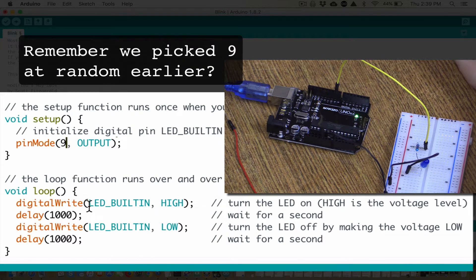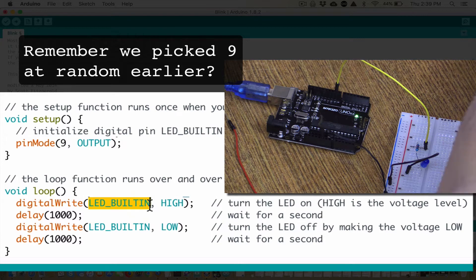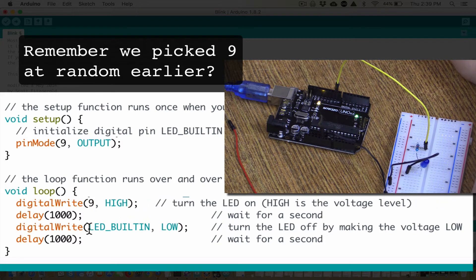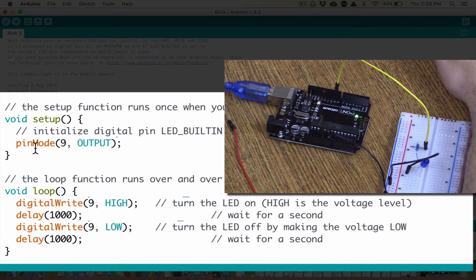See down here where it says LED_BUILTIN? We want that to be 9. And we want that to be 9. So our code here says pinMode 9 is output. That means we want that digital pin to do something, to go outwards.